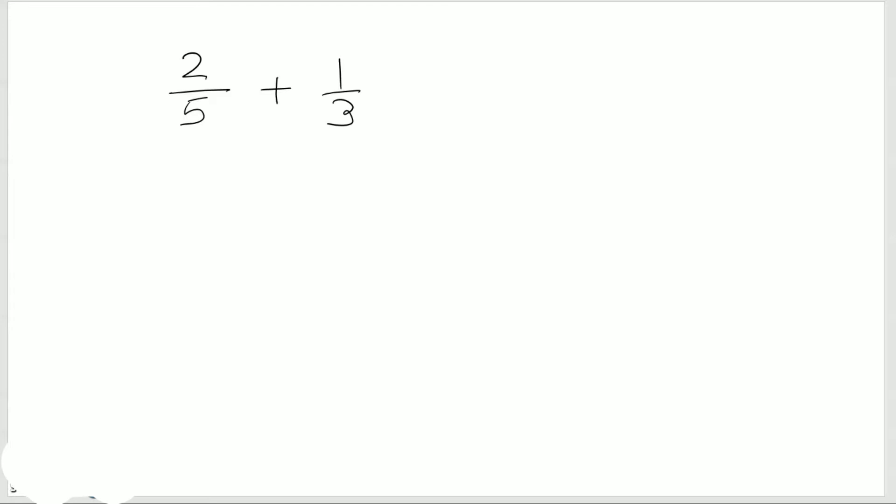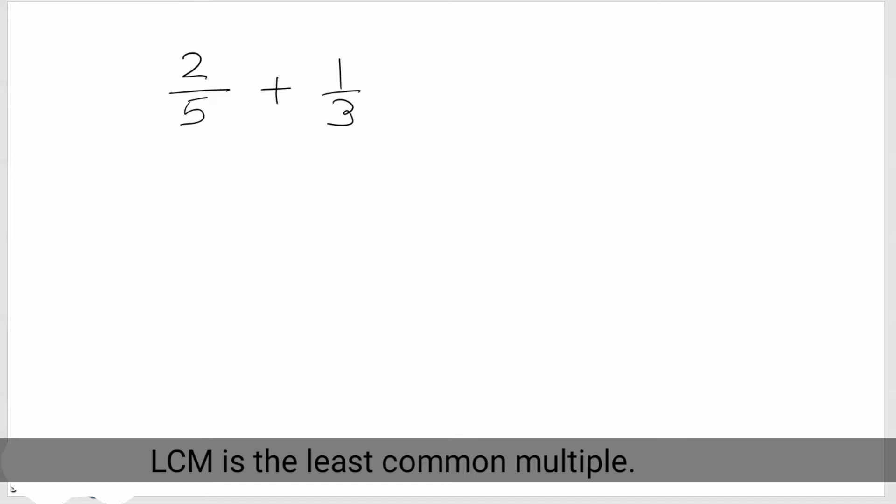And to do that, we need to find the LCM of 5 and 3. So 5 and 3 are prime numbers, so you can simply multiply 5 times 3 and you can get the LCM.